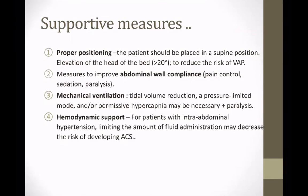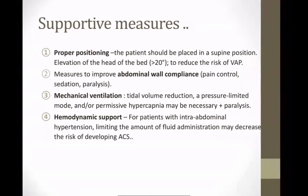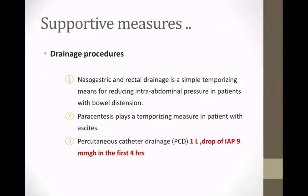Mechanical ventilation is another supportive measure — reducing tidal volume can reduce the chance of barotrauma. Regarding hemodynamic support, when resuscitating a patient with risk factors for ACS, you should keep your patient on a negative balance or at least not on a positive balance. The last supportive measure is drainage — through nasogastric or rectal tube, paracentesis, or catheter drainage. Percutaneous catheter drainage is considered successful only if you can drain one liter and drop intra-abdominal pressure by 9 mmHg in the first four hours.